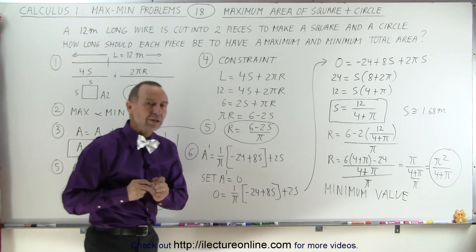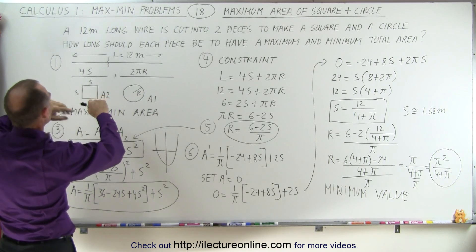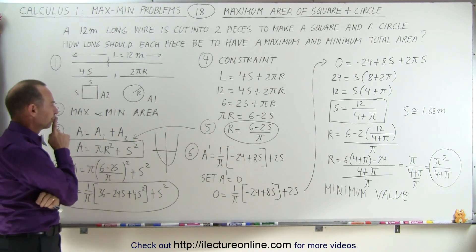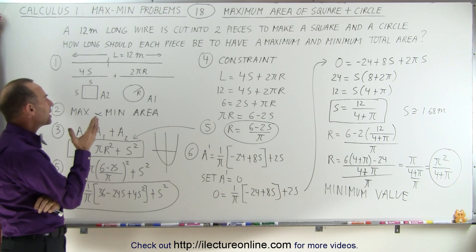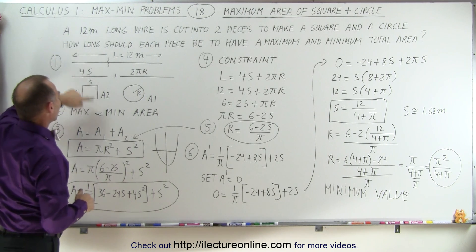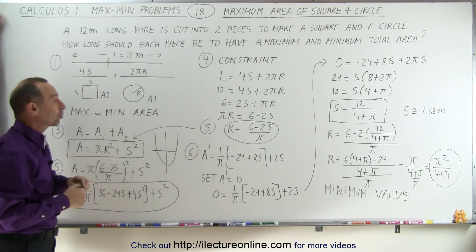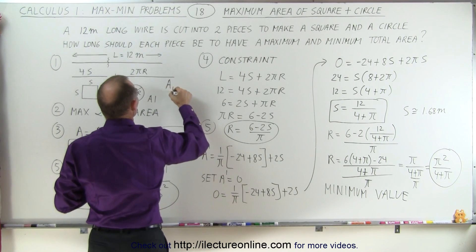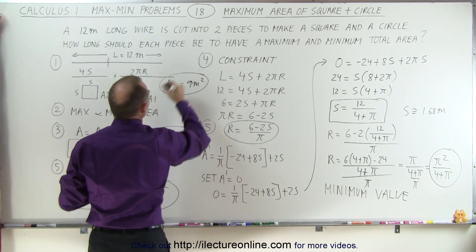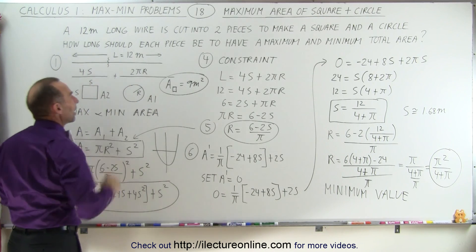The maximum value will be obtained when we use the entire wire to either make a square or a circle. If we use all 12 meters of wire to make a square, there are four sides, so each side would be 3 meters, and the area would be 3 × 3 = 9 square meters.